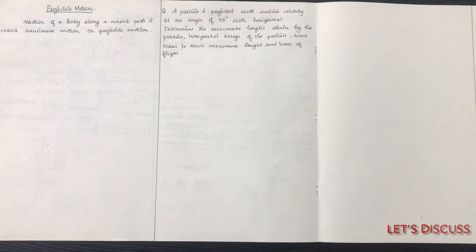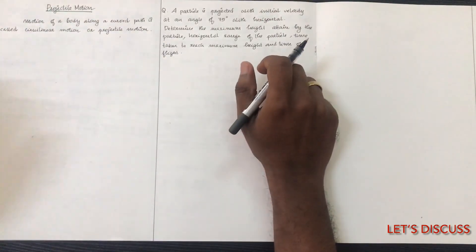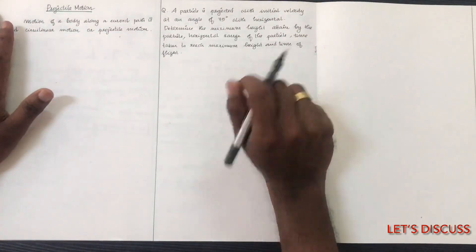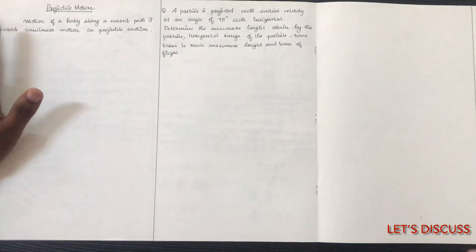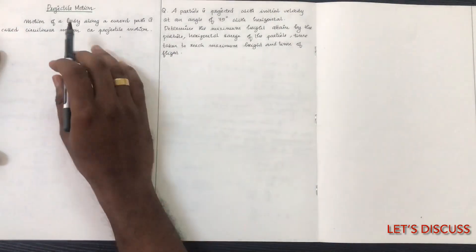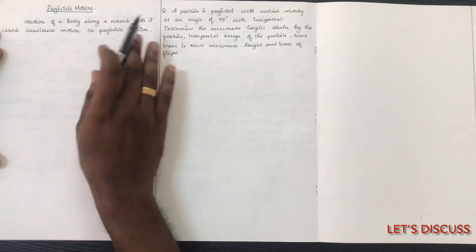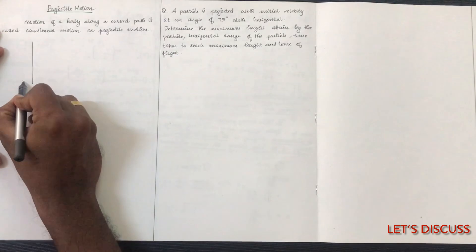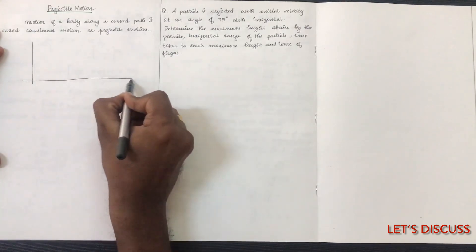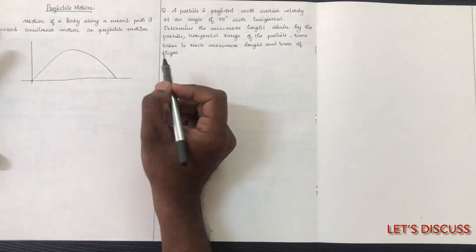This is the project—projectile motion. We have rectilinear motion with equations like v equals u plus at, and s equals ut plus half at squared. Now we have projectile motion. This is the motion of a body; it is called curvilinear motion or projectile motion. The distance is x and we are going at a particular angle.